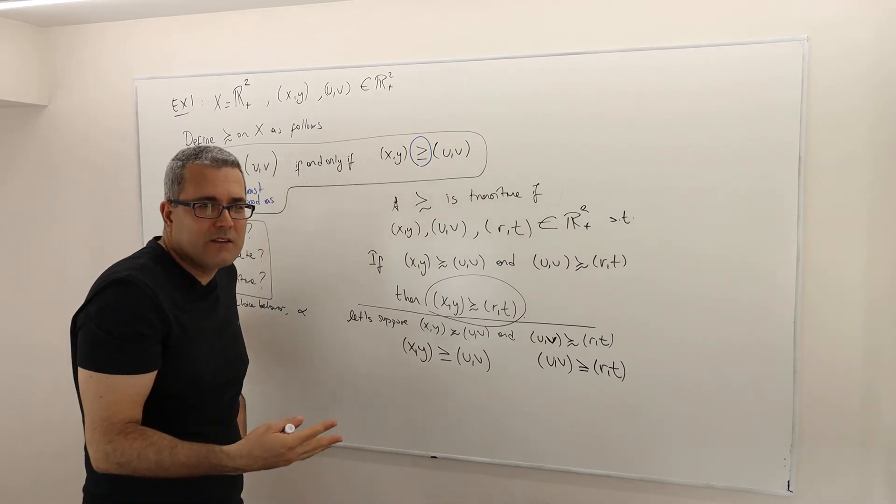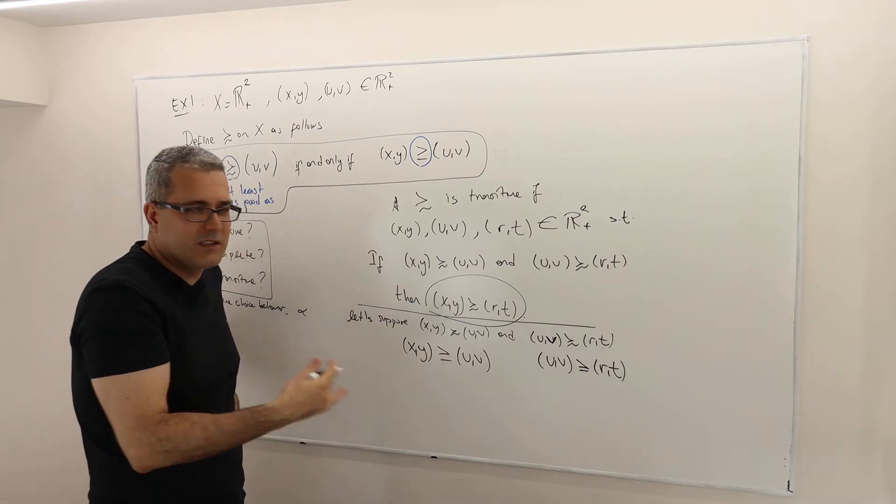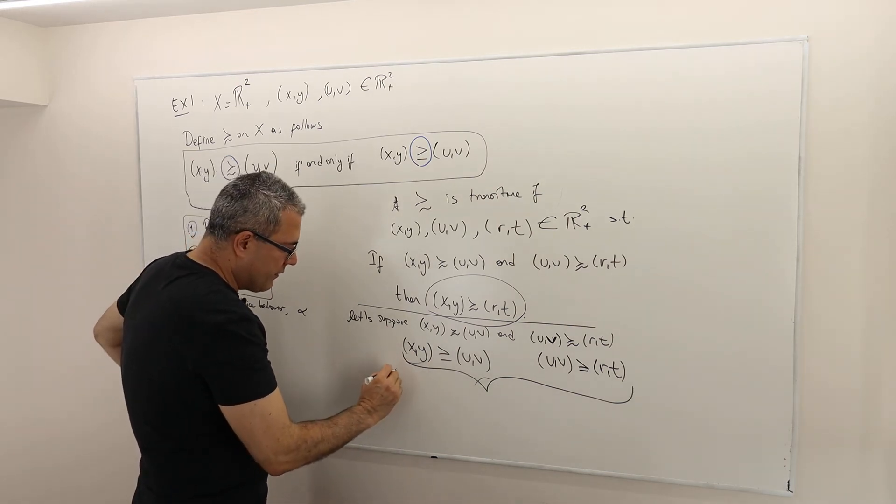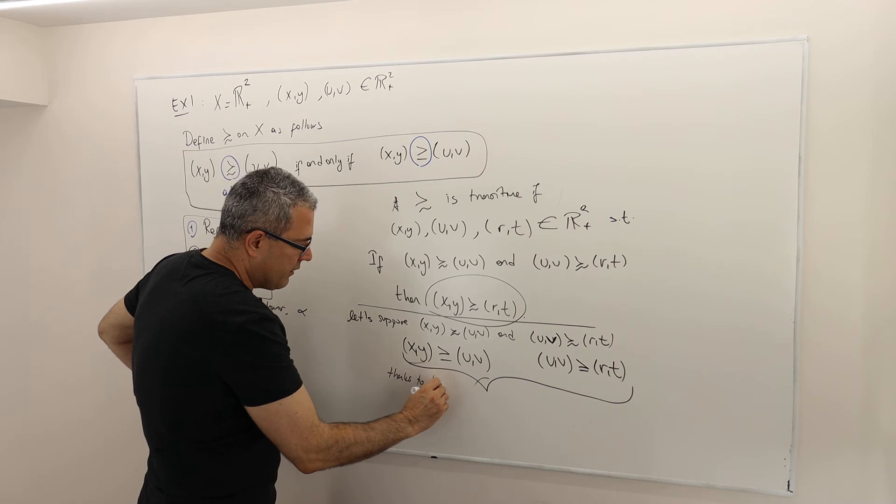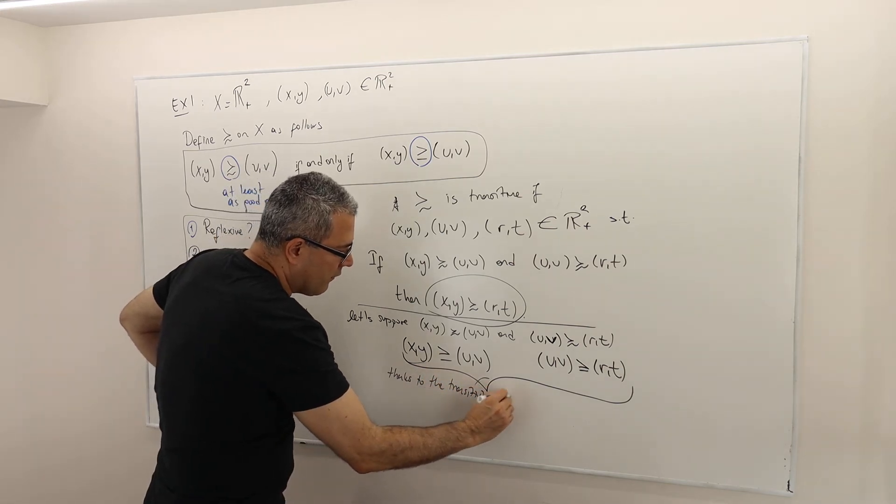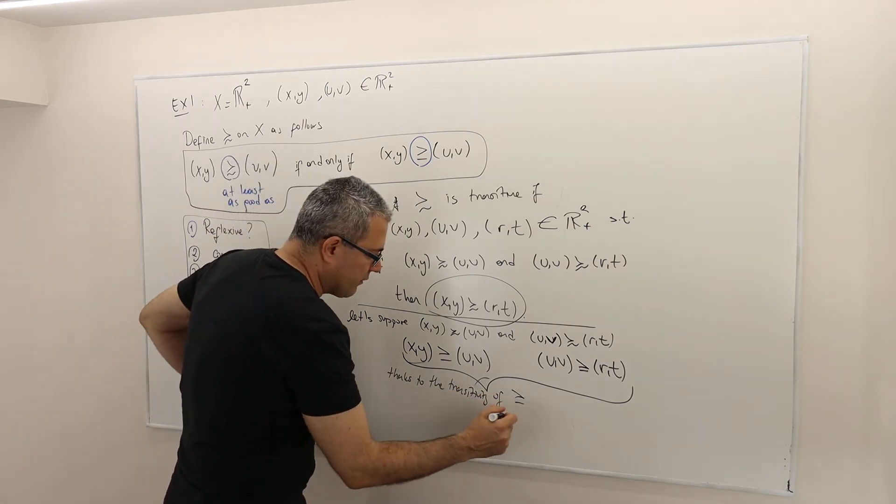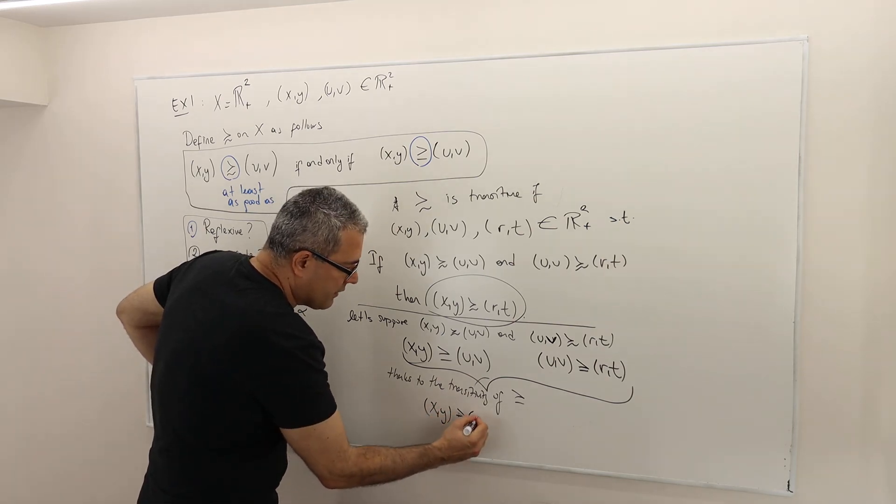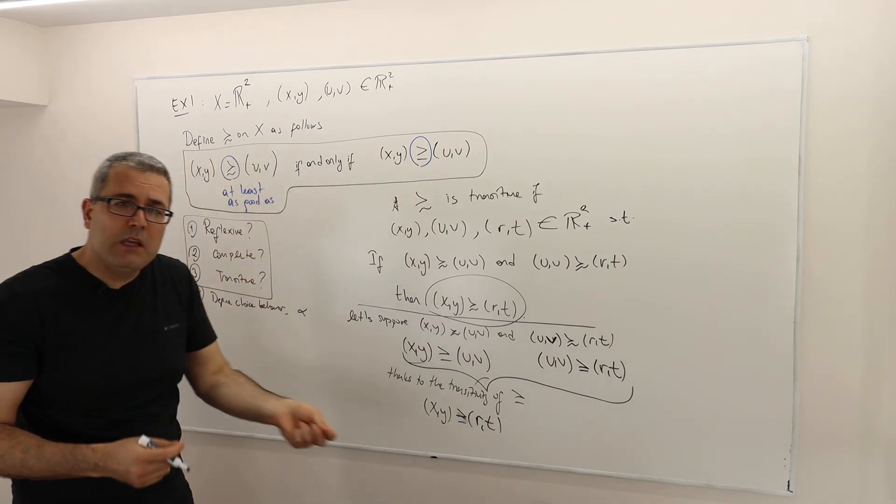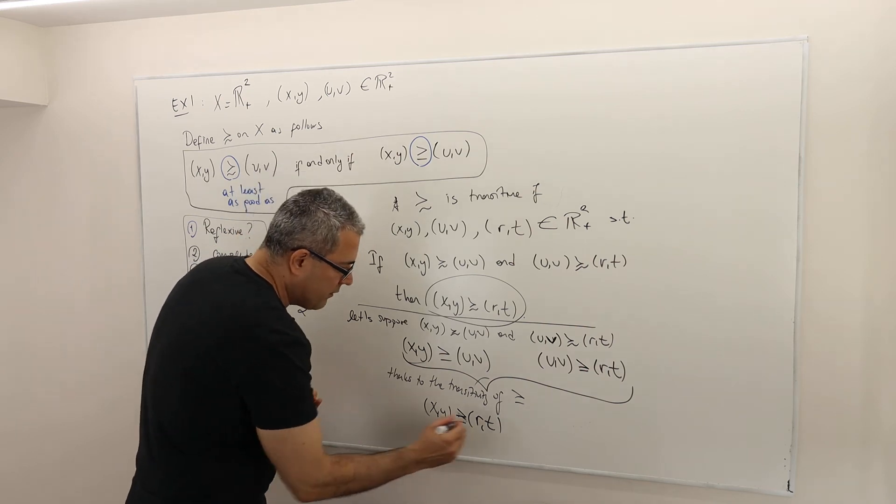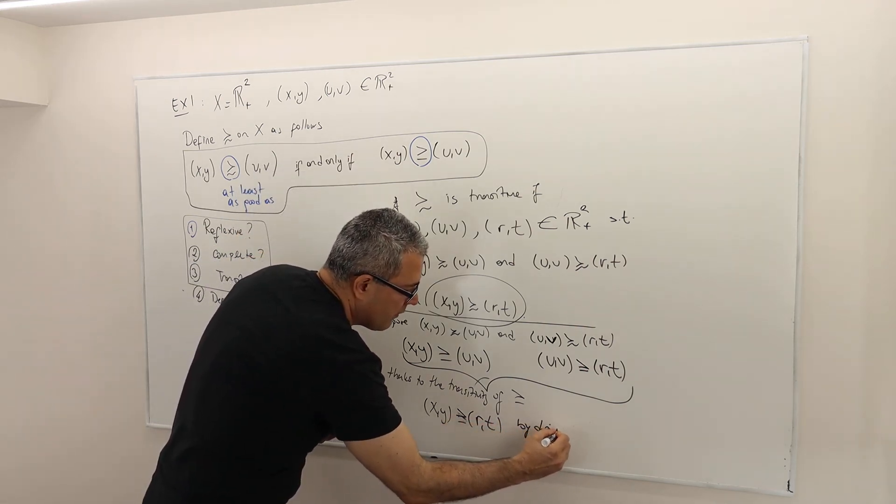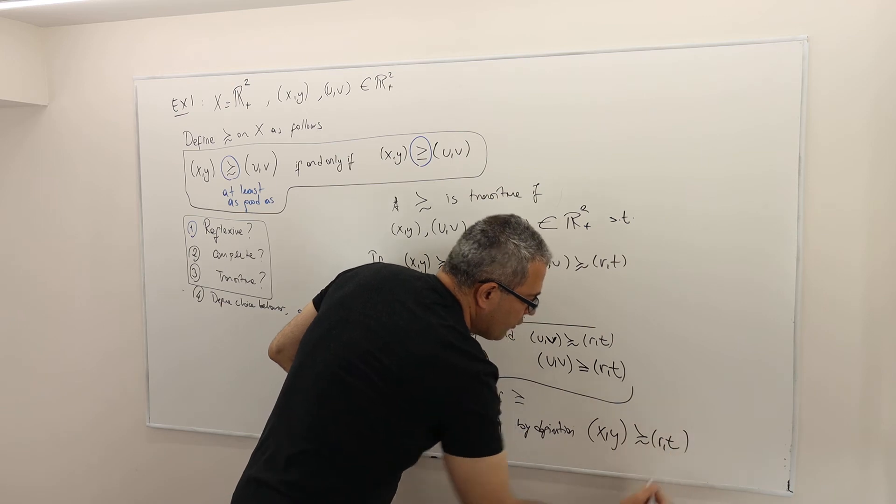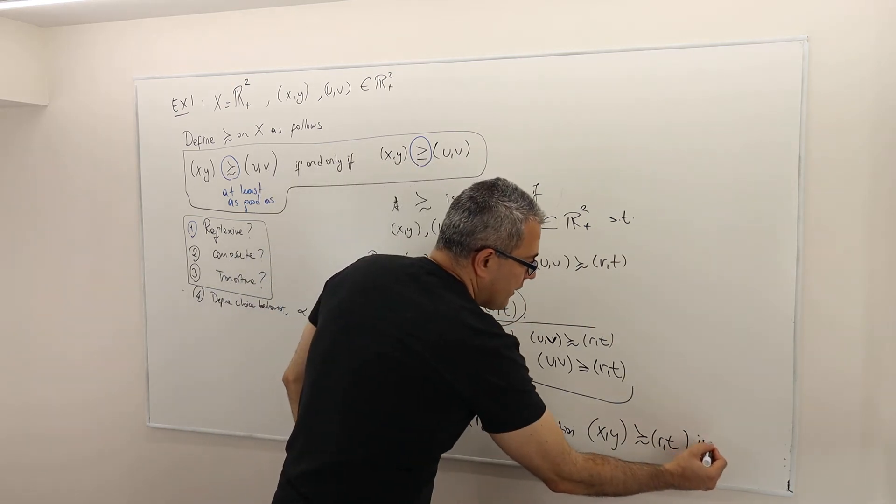I am sort of skipping writing formally because I think it's quite obvious. So thanks to the transitivity of greater than or equal to, a binary relation, we know that X, Y is greater than or equal to RT. But by, so let me go back to the definition again, by definition, because this is true, well then, you know what? X, Y at least as good as RT should also be true, right? Is also true.